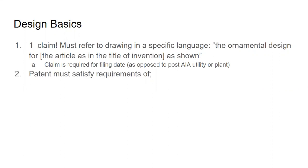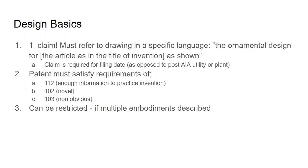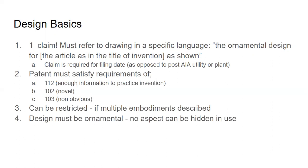The patent must satisfy the requirements of 112, 102, and 103, and it can be restricted if multiple embodiments are described. It might seem strange to imagine multiple embodiments with only one claim, but if different drawings — say a doorknob and a bicycle — are present, those are patently distinct inventions and can be restricted. The design must be ornamental, so no aspect can be hidden in use.